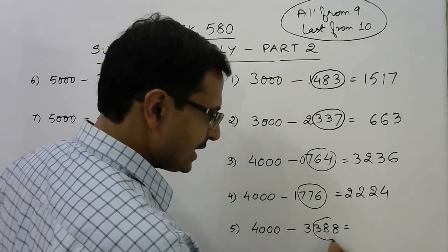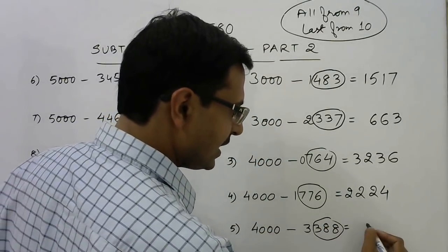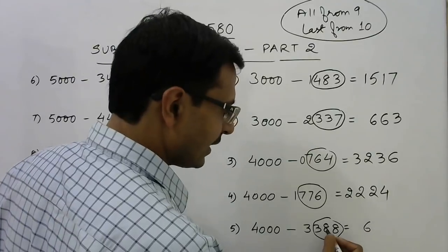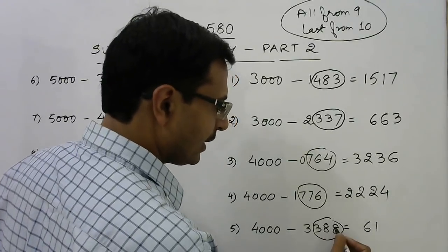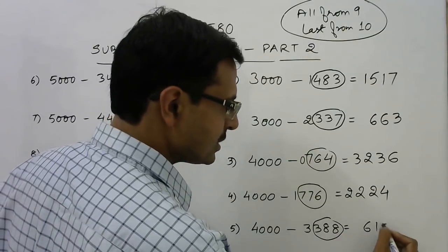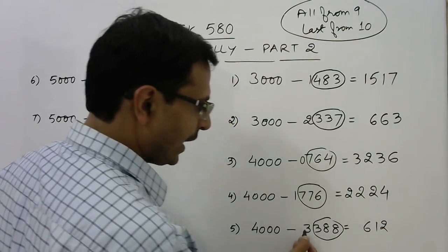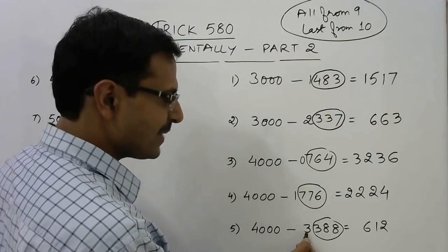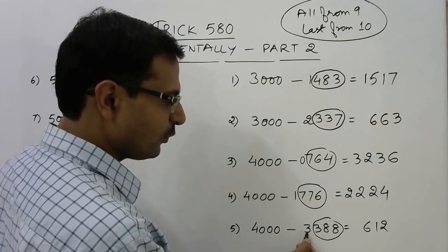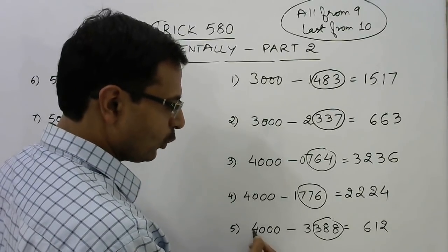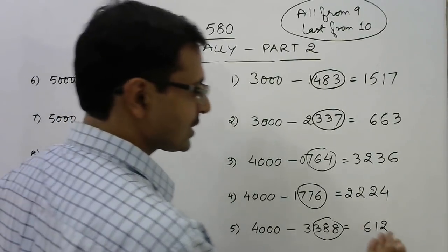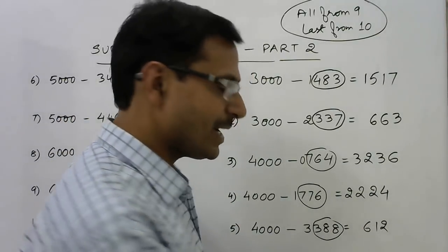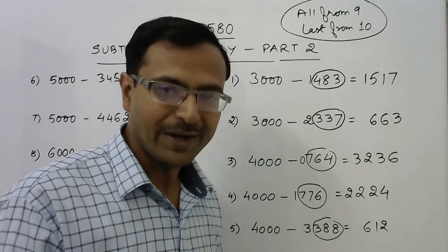Now 4000 minus 3388. The last three digits are 388: 9 minus 3 is 6, 9 minus 8 is 1, 10 minus 8 is 2. Increase the leading digit 3 by 1 to get 4, and 4 minus 4 is 0, so we don't write a leading zero. The answer is 612.